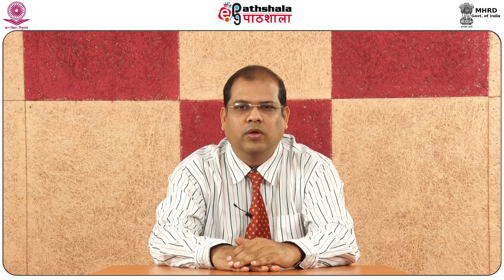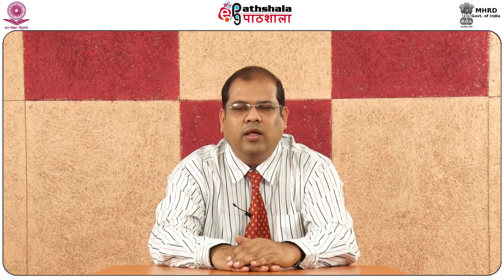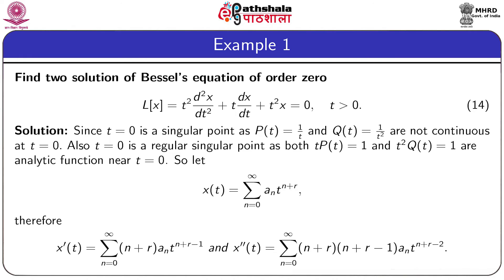We have just learned the Frobenius method, which is used to find solutions of second-order differential equations near singular points. To understand the theory, we will now discuss an example step by step. We consider Bessel's equation of order 0: t²·d²x/dt² + t·dx/dt + t²·x = 0, where t > 0.